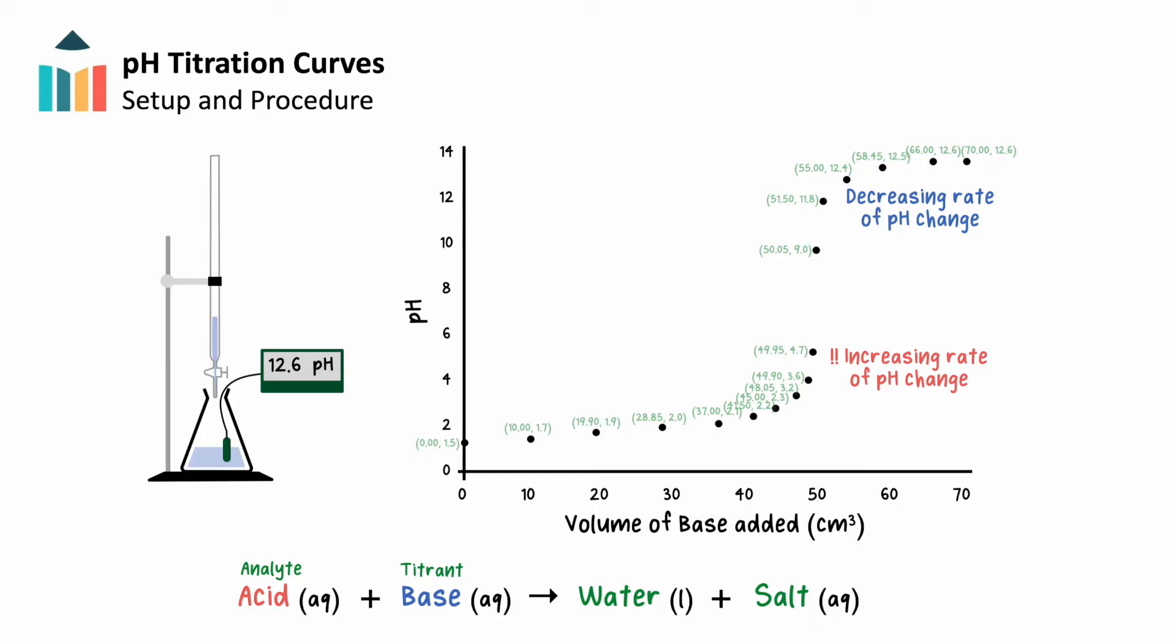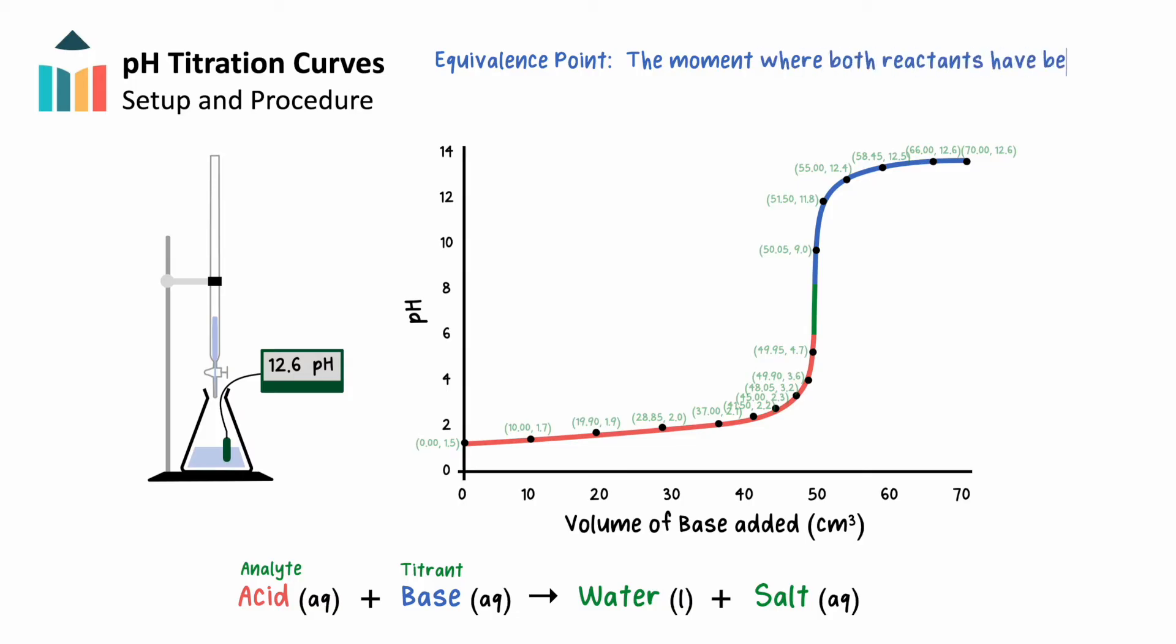Titration curve data will tend to have this S-like shape, which becomes even more apparent when we draw our line of best fit. For us, we've color-coded this line so that it's more clear what the relative pH is for a given section, and therefore which substance is in excess in the container. One of the most important pieces of information we'd like to identify with our data is the equivalence point, where the exact amount of titrant has been added to the analyte in our container such that both reactants have been completely consumed. This point occurs at the inflection of our titration curve.